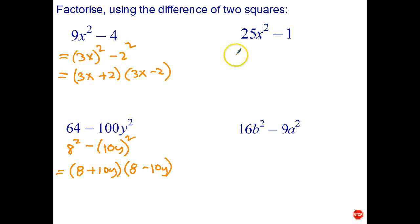This one over here, is that a difference of two squares? Well yes it is. That's (5x)² and that's 1². So that can be written as (5x + 1)(5x - 1).